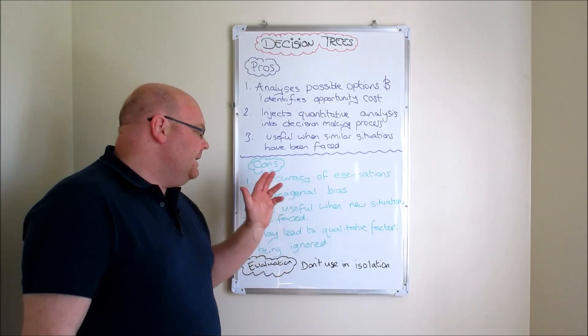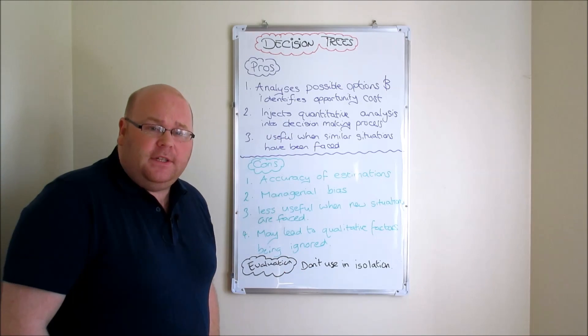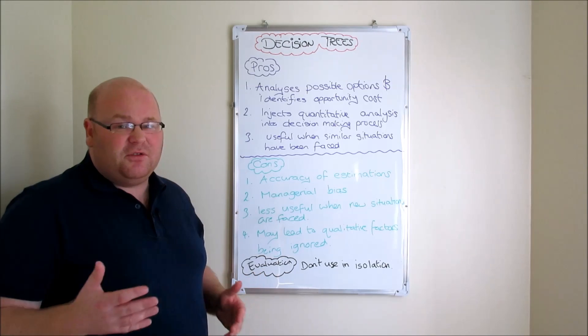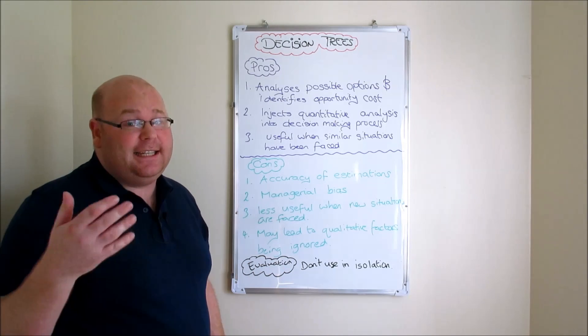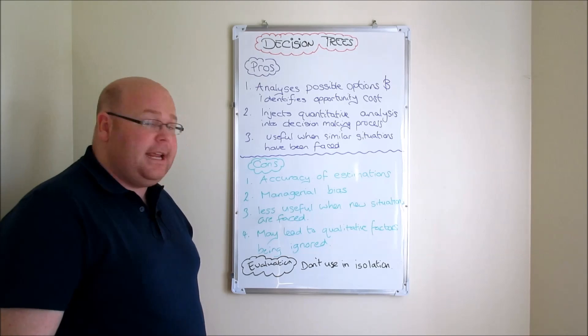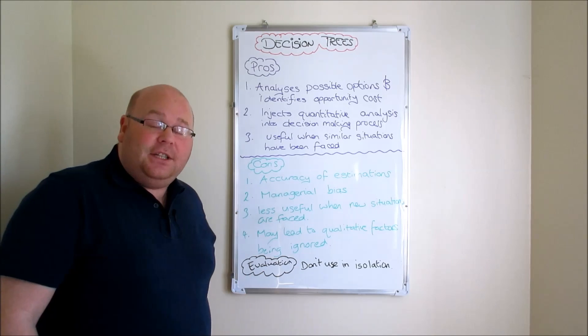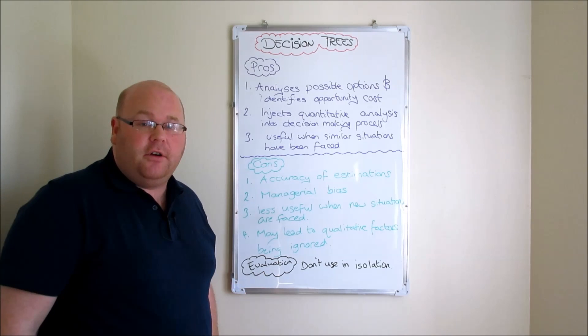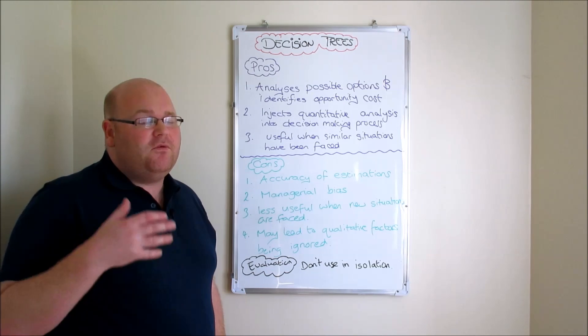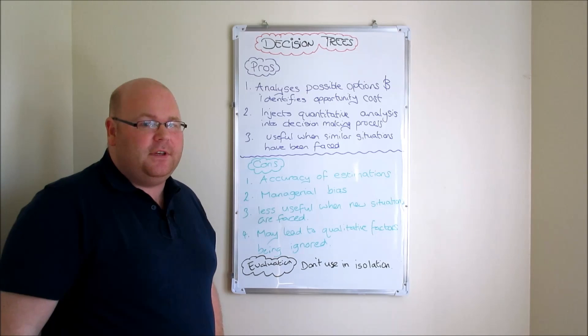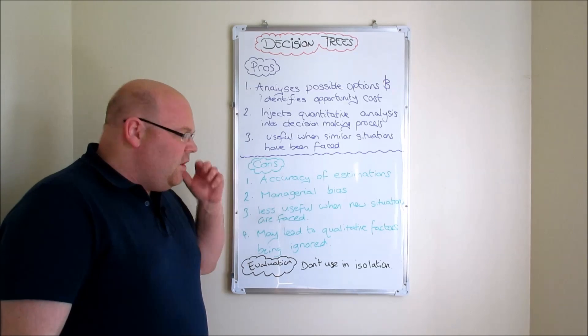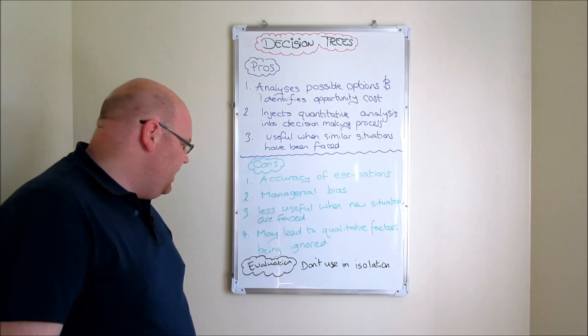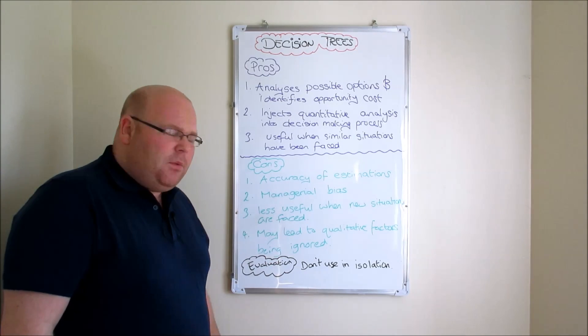We said that one of the pros of decision trees is that they're most useful if the business has been in similar situations in the past, is making decisions that they've made similar decisions on in history. Well they're less useful then by default when businesses are making decisions based on new scenarios that they find themselves in. So it really degrades the value of decision trees as a tool when you're using it to make decisions when you're in new situations or perhaps new markets that you're not familiar with.